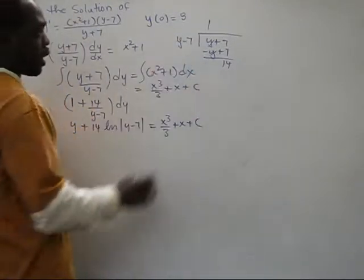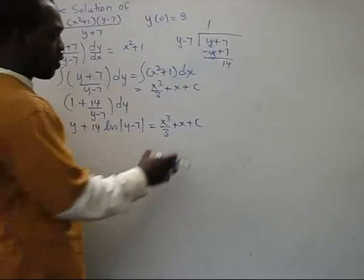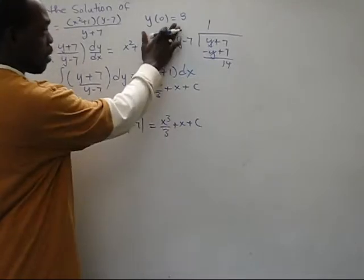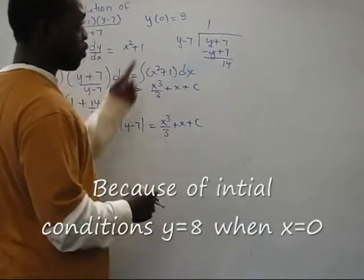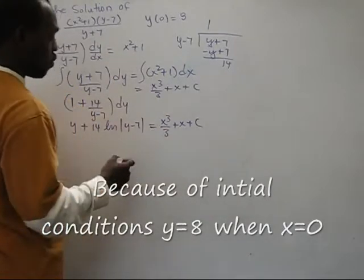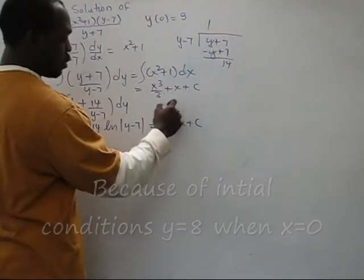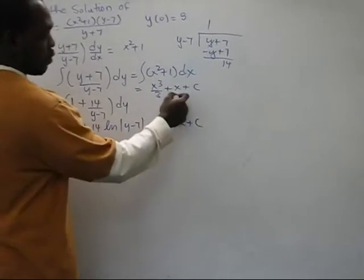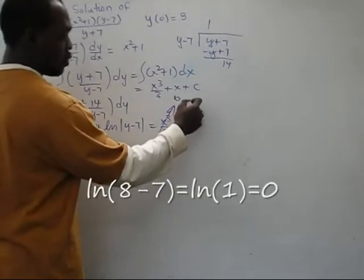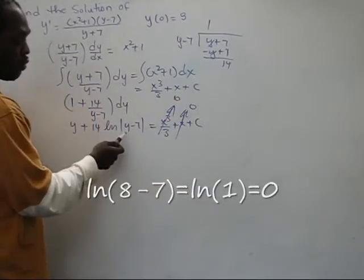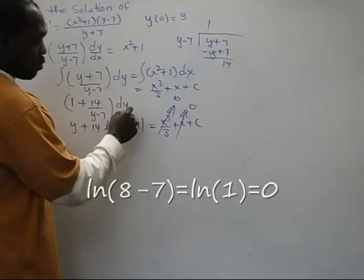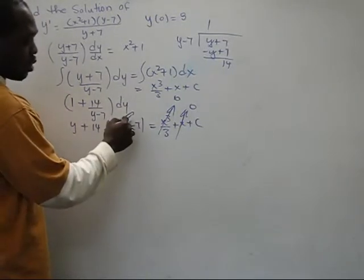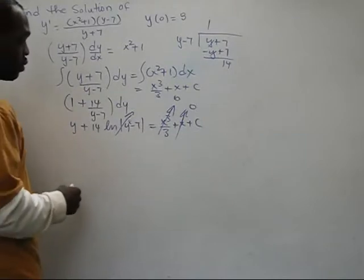Now what I need to do is find the value for C. Every time I have X equals 0, I have Y equals 8. If I close 0 for X here, I have 0 here and 0 here. If I close 8 for Y, the natural log of 1 is 0 here.